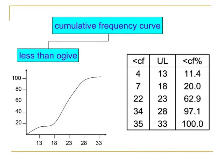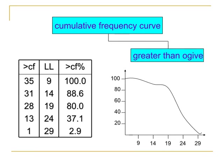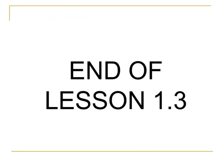The graph of the less than ogive is an increasing graph, and it uses a smooth curve rather than a polygon. The greater than ogive is a decreasing line, also presented as a smooth curve. That ends our lesson 1.3. Do not forget to subscribe to my channel and click the notification bell for more updates. Thank you.